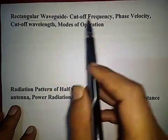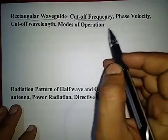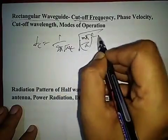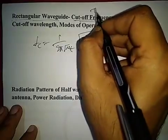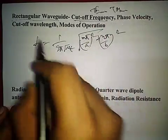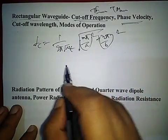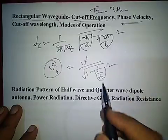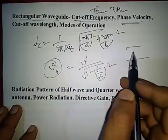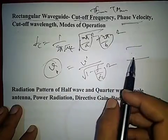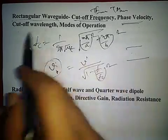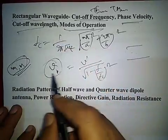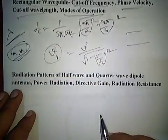Rectangular waveguide is another important topic. Cutoff frequency Fc = (1/2pi)*sqrt(1/mu*epsilon) * sqrt((m*pi/a)^2 + (n*pi/b)^2) is very important for TEmn or TMmn modes. Phase velocity inside the rectangular waveguide is vp = v / sqrt(1 - (f/fc)^2), which is slightly larger than outside. Modes of operation, cutoff wavelength, and guide wavelength using Vp can also be asked.